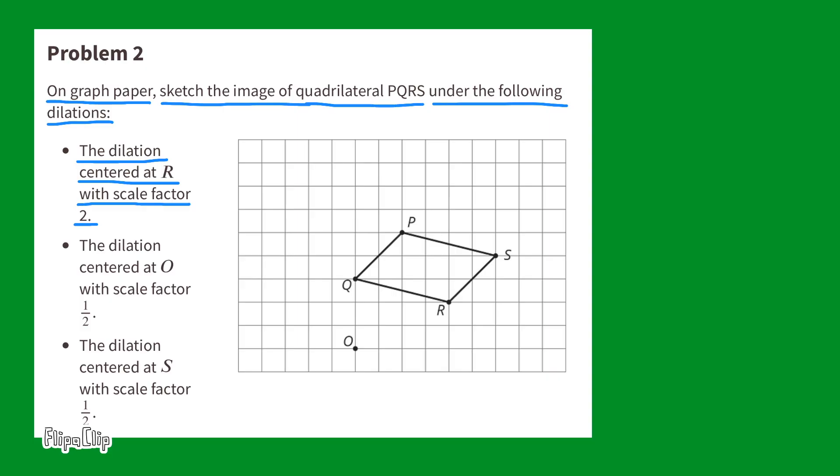Since the dilation is centered at R, locate point R, and since it's a scale factor of 2, you'll have to multiply the distance between R and S by 2. You start at point R and go twice the distance, taking you past point S.